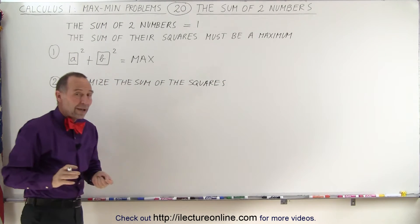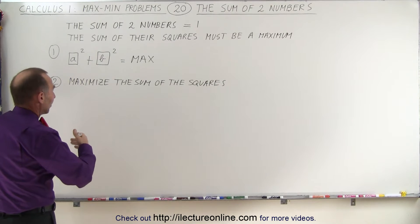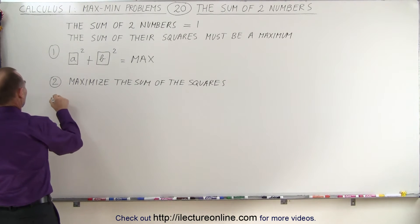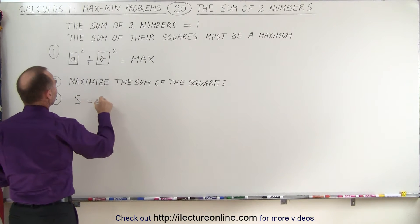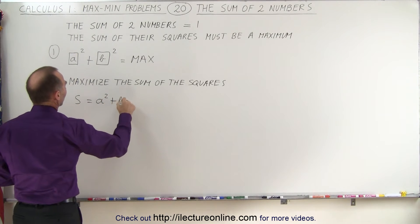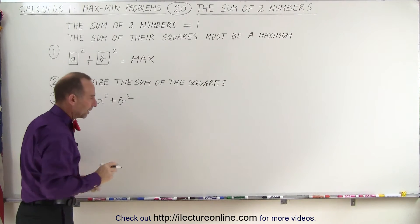We want to maximize the sum of the squares, which means we now have to define an equation that represents the sum of the squares, and that's item number 3. So the sum, let's call it S, is equal to A squared plus B squared. And of course, that's what we're trying to maximize.